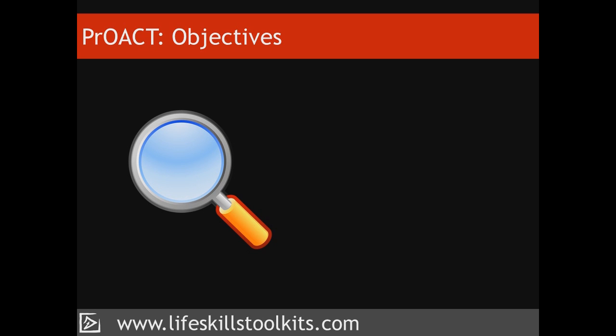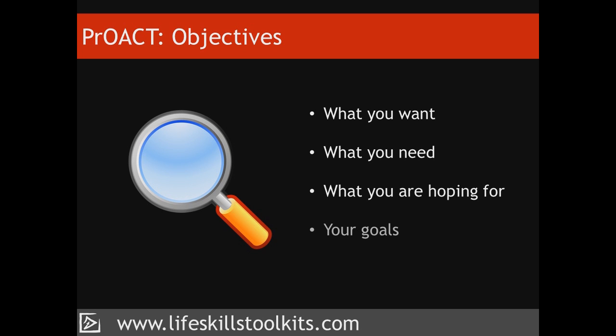Understanding the result of making a good decision is about identifying what you want, what you need, what you're hoping for, and your goals. The better your objectives, the better your criteria from which to make a decision that counts. And the more objectives you identify, the more alternatives you have from which to make a choice.